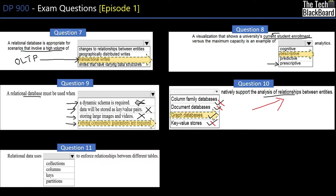Question eleven: relational data uses what to enforce relationships between different tables? In relational databases you have tables with columns, and on those columns you set primary keys or foreign keys. Primary keys and foreign keys help create relationships between tables. The correct answer is 'keys.'